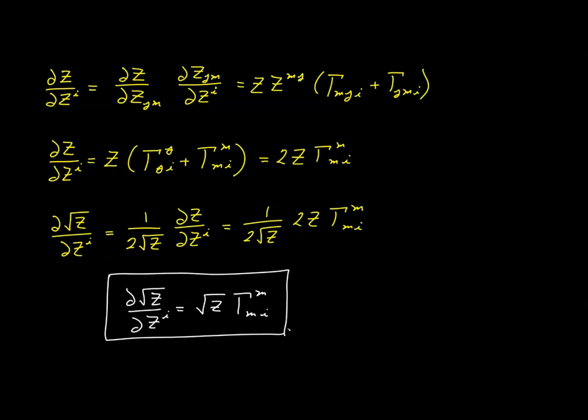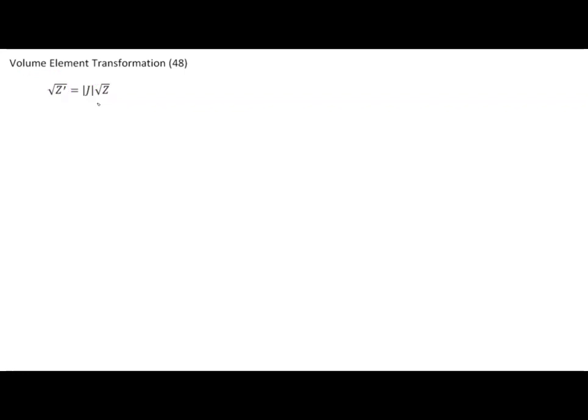To end this video with a brief review: what we did in this video was to introduce a new element called the volume element, which is the square root of z, where z is the determinant value of our covariant metric tensor. Now, the volume element is not an invariant object — it's not the same for each coordinate system — and we showed that it transforms using the absolute value of our Jacobian determinant. We said that the volume element in tensor calculus plays roughly the same role that the Jacobian does in other disciplines.